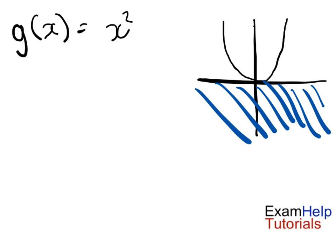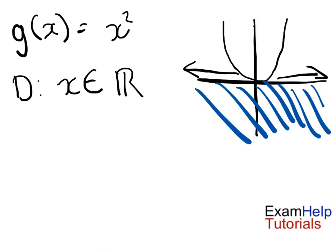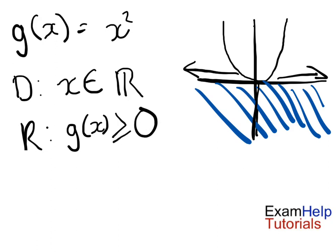So we've already got a different answer. For the domain: because the parabola goes out in both x directions, our domain is again any real numbers — x is in the subset of real numbers. For the range, it doesn't go below 0, so it's not going to be negative at all, but it can be equal to 0. So g of x is greater than or equal to 0.